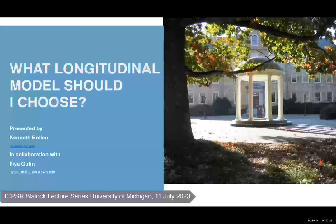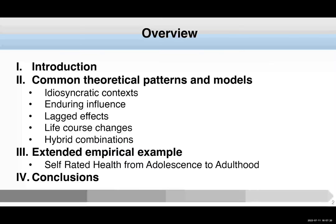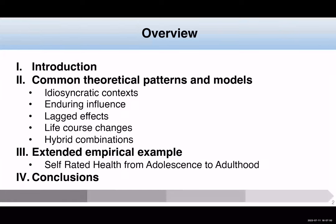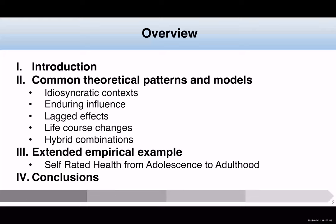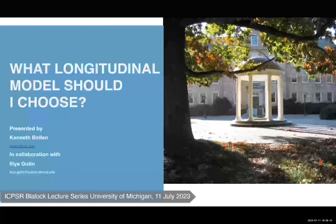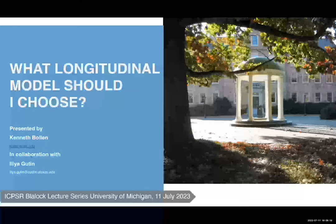Let's get on to the main topic: what longitudinal model should I choose? This is just an overview of what I'll cover. I'll have a brief discussion of common theoretical patterns and observations people make across a number of different social and behavioral type phenomena. Then I'll do an extended empirical example to illustrate how we can estimate these different models. These slides were prepared in collaboration with Ilya Gooden, who was a co-author on the paper that is the empirical example I'll be going over.